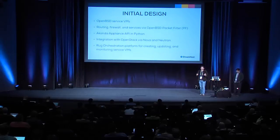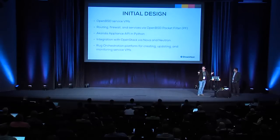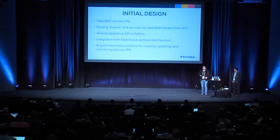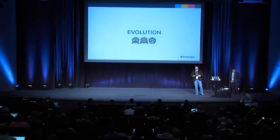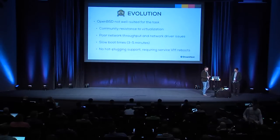When we first started out, the idea was to run OpenBSD in a service VM inside each tenant, plug it into their vSwitch, use Packet Filter (PF) to provide all the services we need, build a little API, and it would be really easy. And it turns out it's really hard. As we went forward, we realized we had made some missteps. We iterated and tested and came to the model we're at today.